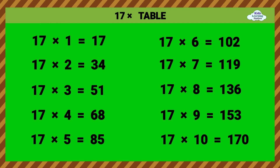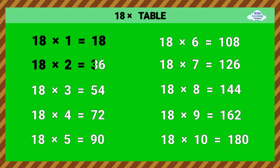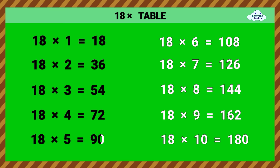18 times table. 18 times 1 equals 18. 18 times 2 equals 36. 18 times 3 equals 54. 18 times 4 equals 72. 18 times 5 equals 90.